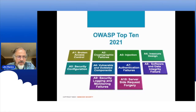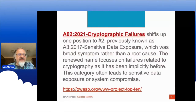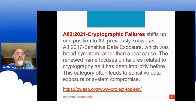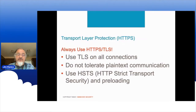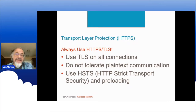Moving to A2: cryptographic failures. This used to be called sensitive data exposure, but the root cause is some kind of broken crypto implementation that leads to sensitive data exposure. The category has been renamed and the priority raised — it's a big deal now. So much more of what we're doing is crypto-based: JSON web tokens, key management, and digital signatures are now core parts of identity. We need to get crypto right.